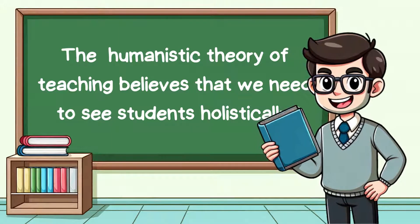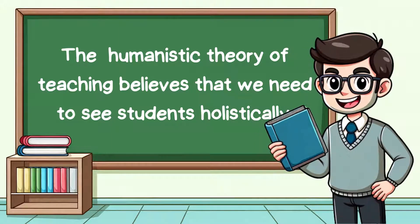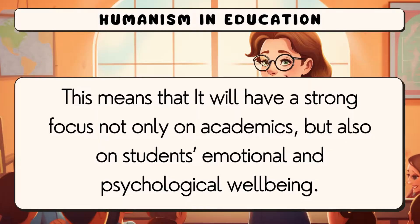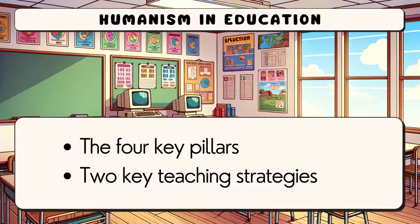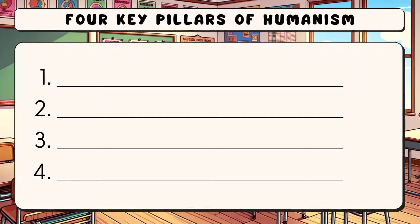The humanistic theory of teaching believes that we need to see students holistically. This means it will have a strong focus not only on academics, but also on students' emotional and psychological well-being. In this video, we'll look at the four key pillars of humanism, and I'll give you two key strategies for humanist education from famous education theorists Abraham Maslow and Carl Rogers. So let's start with the four key pillars.